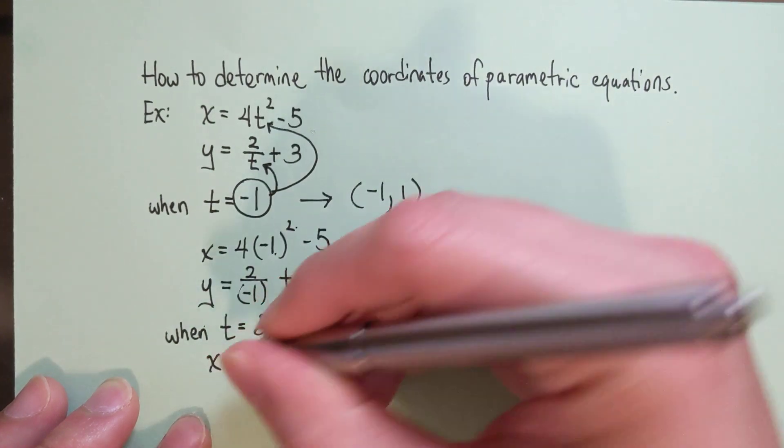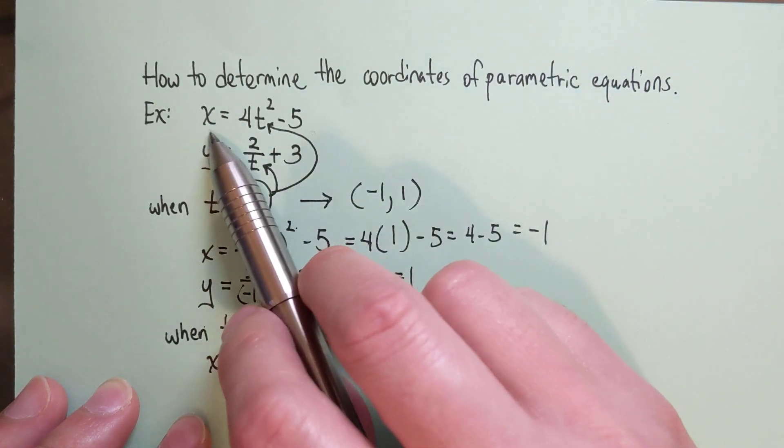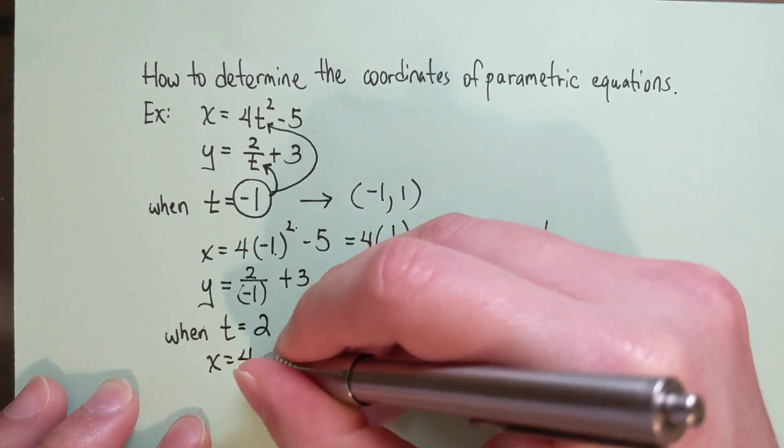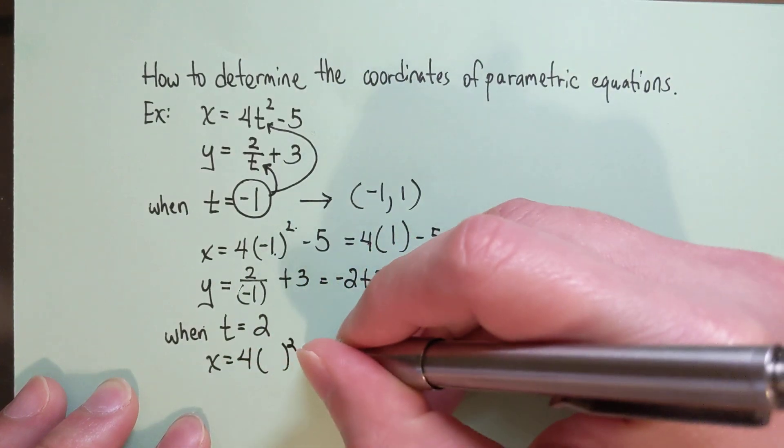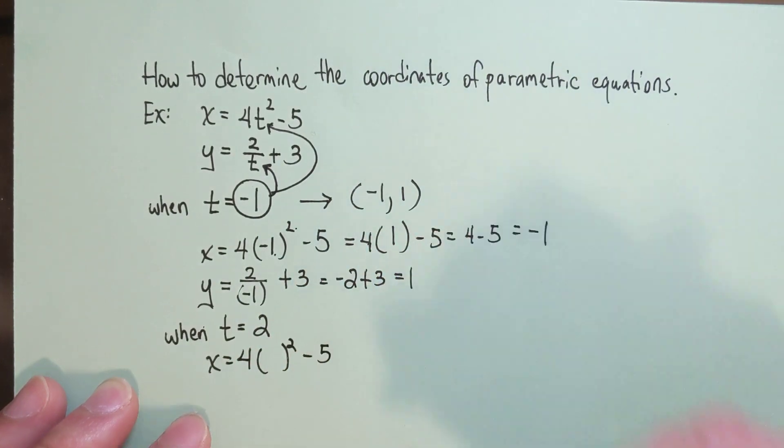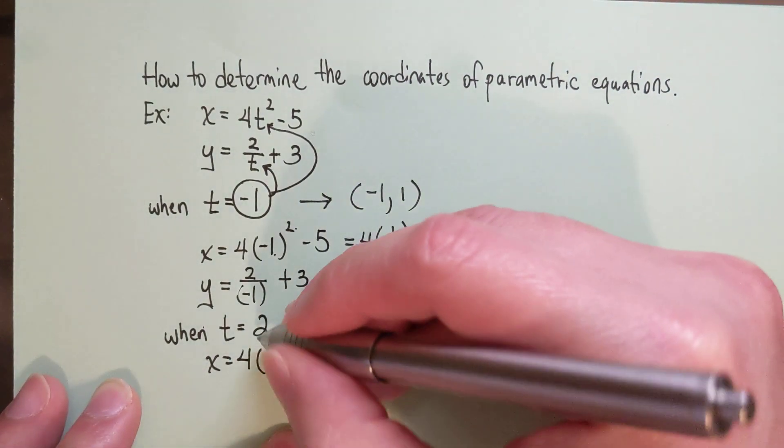Once again, I'm just following the equation. The parametric equation of x equals 4 times t squared minus 5, and t in this case will be 2.